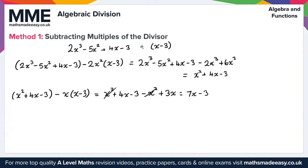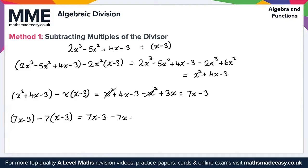We then subtract 7 lots of x minus 3 to remove the x term. So we have 7x minus 3, and we subtract 7 lots of x minus 3. Expanding gives minus 7x plus 21. The 7x cancels, and we get minus 3 plus 21, which gives us 18.